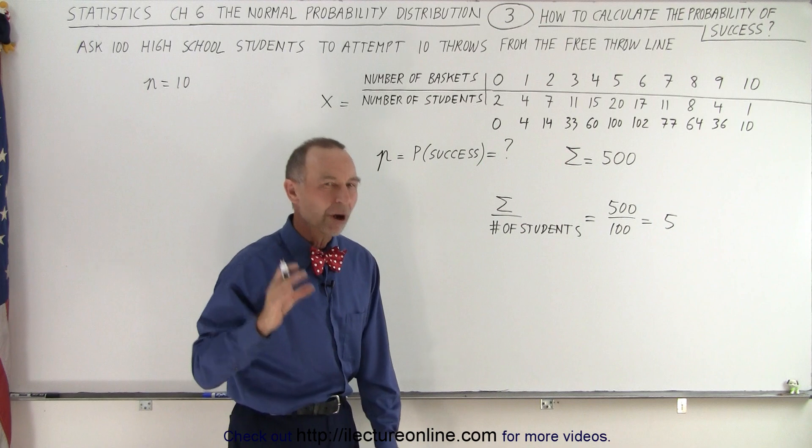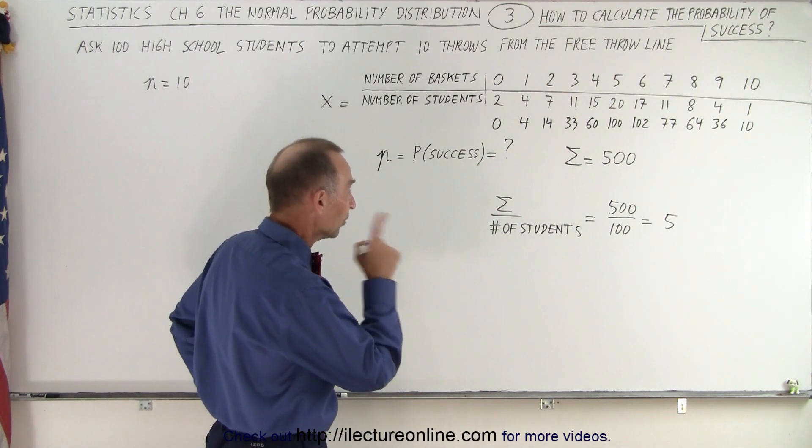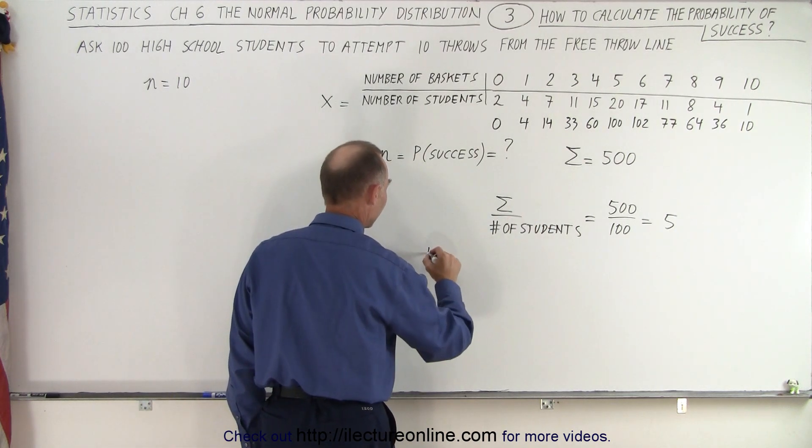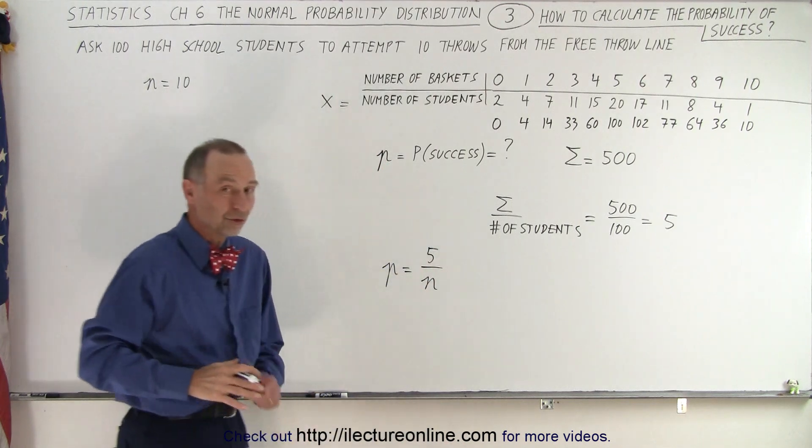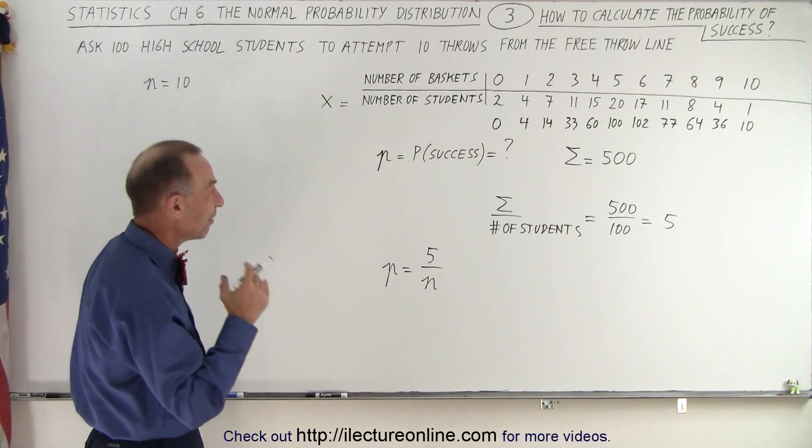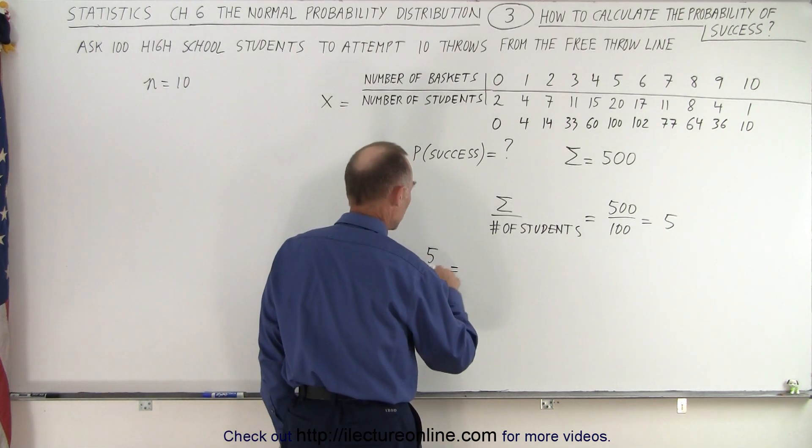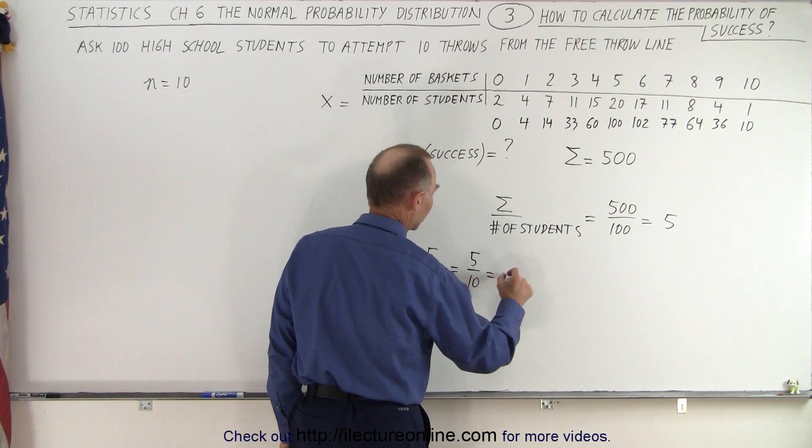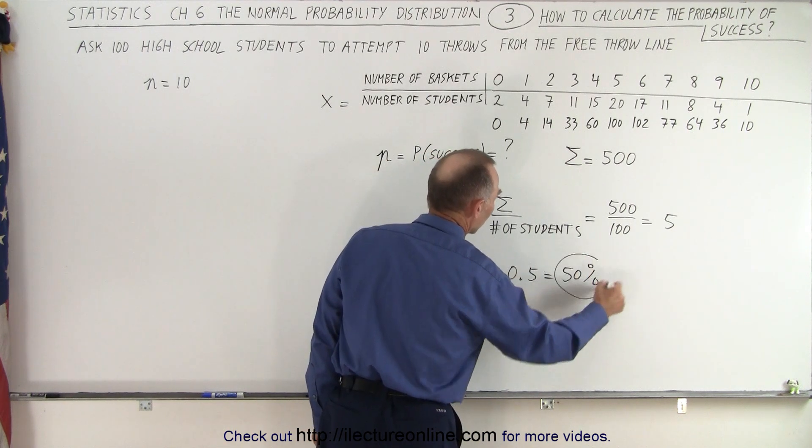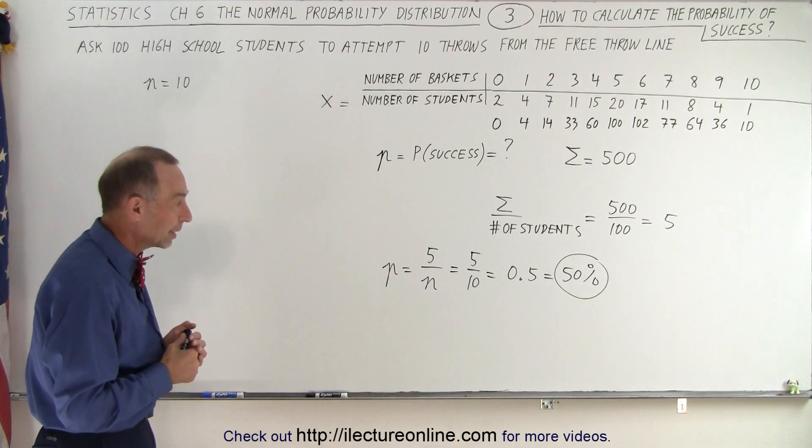Now 5 is the most probable number of baskets made based upon our calculation. So now to get the probability of success, we take that result, 5, and we divide it by the number of tries. We try 10 baskets and most likely we'll make 5. So the probability of success, therefore, is equal to 5 divided by 10, which is equal to 0.5, which is 50%.